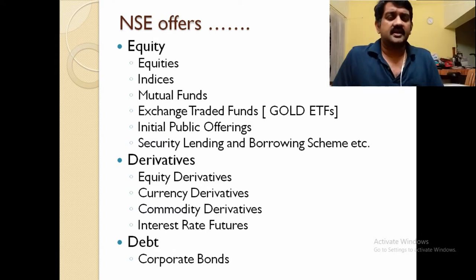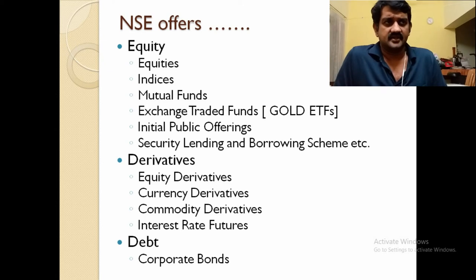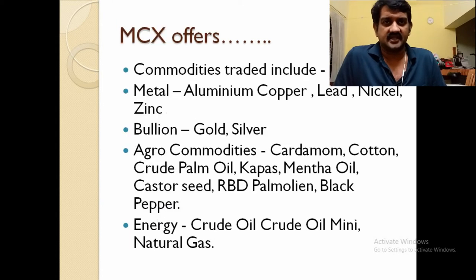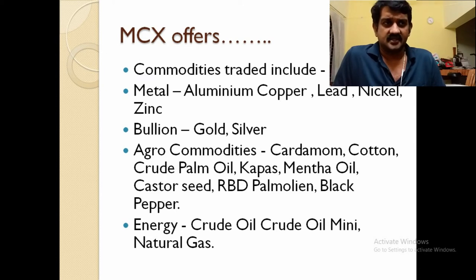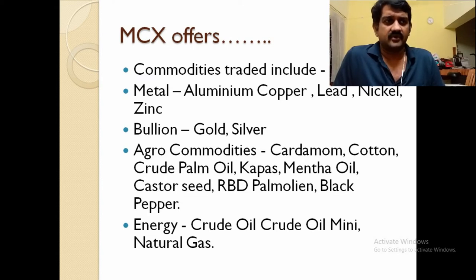Now, MCX — the Multi Commodity Exchange — offers commodity trading. Metals available include aluminum, copper, lead, nickel, and zinc. Bullions consist of gold and silver. Agri commodities are very useful for agriculturists and include cardamom, cotton, crude palm oil, castor seed, and black pepper.